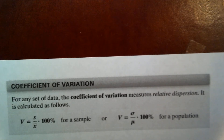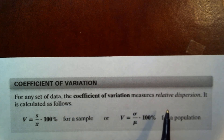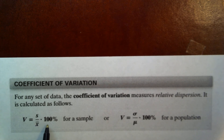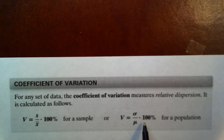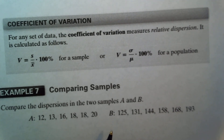The last item of section 12.3 is the coefficient of variation. For any set of data, the coefficient of variation measures relative dispersion. It is calculated as V equals the standard deviation divided by the mean, times 100 percent. For a population, it is sigma divided by mu times 100 percent.